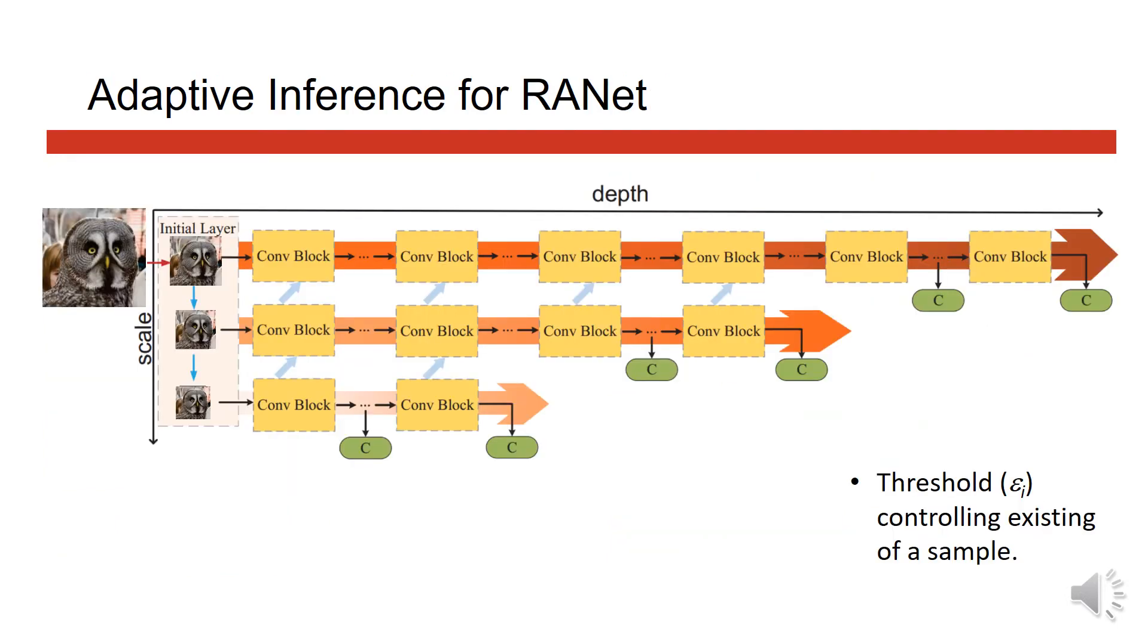Therefore, the RANet is designed as shown. During inference, we first classify the input by a subnet on the lowest resolution. Samples with high confidence will exit early from RANet.